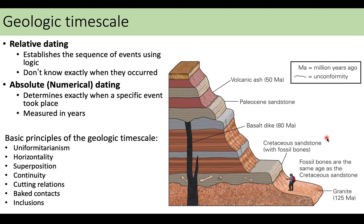Absolute dating, however, determines exactly when a specific event takes place. This is actually measured in years — absolute dating is when you put a year on something.